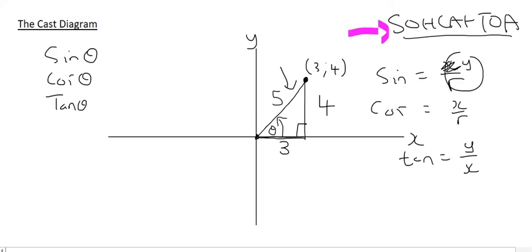SOH-CAH-TOA can be used, or you can use the y, r, and x method. The only reason teachers avoid SOH-CAH-TOA on this diagram is because we have x's and y's, but if you want to use SOH-CAH-TOA, trust me, you can. You'll get the same answers. The x, y, r method does have its downfalls — there are times when it can completely confuse you.